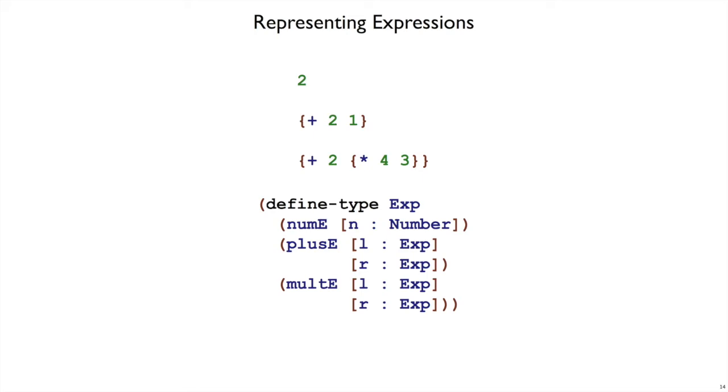To represent these three different kinds of expressions, we will want a define-type with three different cases. So I'm going to call the type EXP, short for expression, and it's going to have three cases: numE, plusE, and multE. And I'm going to stick E on the end just to remind ourselves that numE is a variant of the expression type, plusE is a variant of the expression type, and multE is a variant of the expression type. The numE variant has just a number in it, and the plusE and multE expressions have two other expressions inside them.